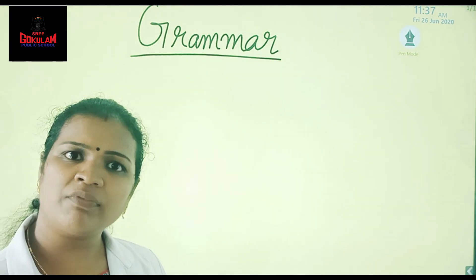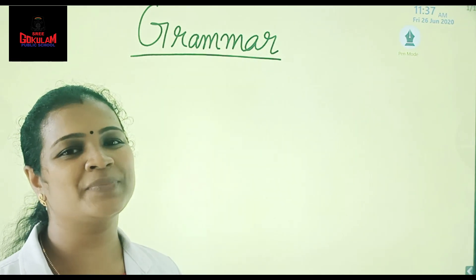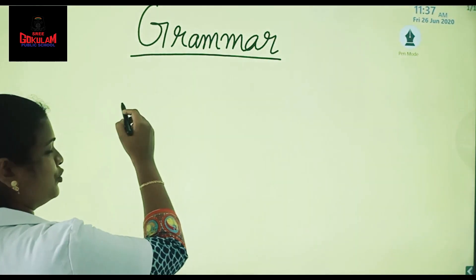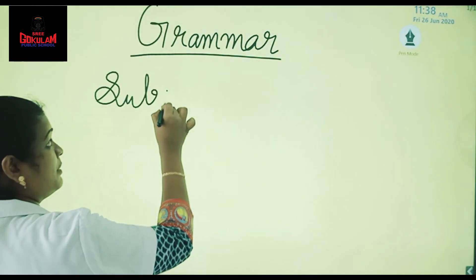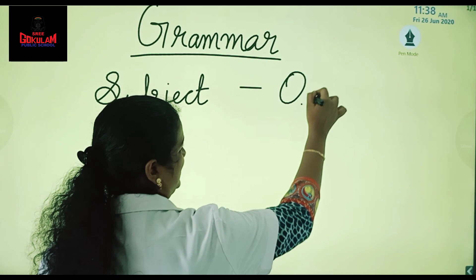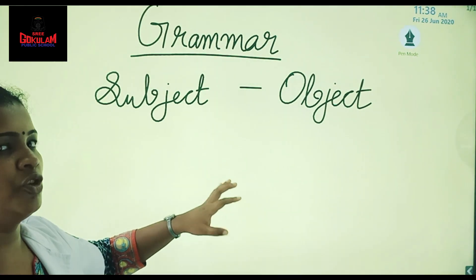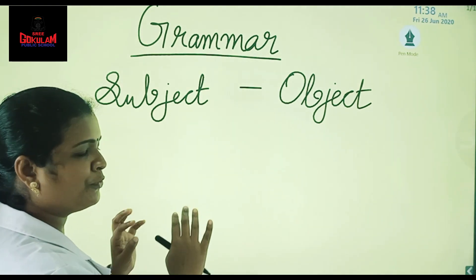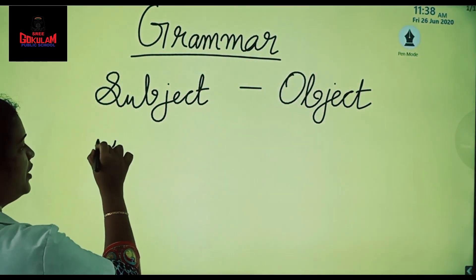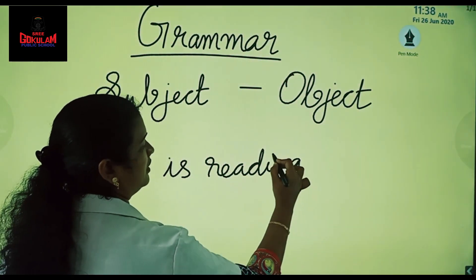So, subject — we have so many subjects, right? Communication is a subject, maths, science, social — so many subjects are there. But we are not talking about those subjects here. We are talking about some other subject. For studying what is a subject and what is an object, let's write a sentence here today. By using that sentence we can find out what is a subject and what is an object. So, listen: she is reading a book.